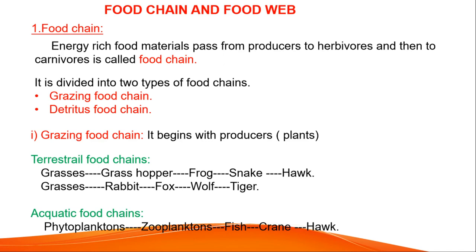First, the grazing food chain begins with producers — plants. An example is a terrestrial food chain: grasses → grasshopper → frog → snake → hawk, each depending on the previous for food. Another example: grasshopper → rabbit → fox → wolf → tiger. Energy transfers in a chain form from producers to herbivores to carnivores — this is called a food chain.